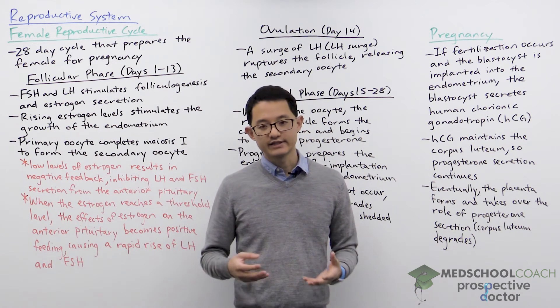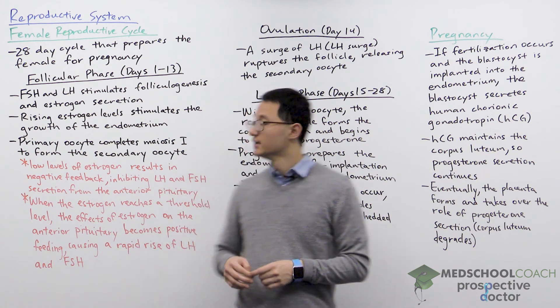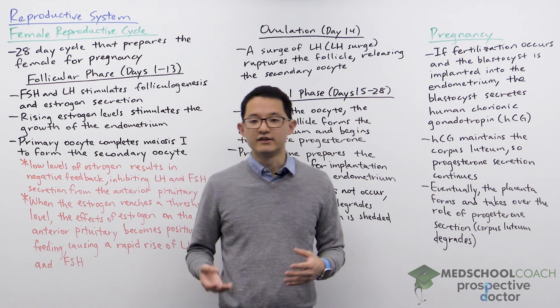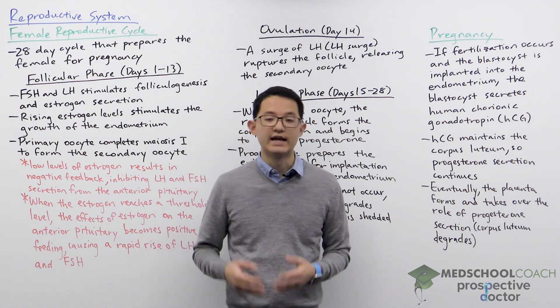You can see in this diagram that once fertilization occurs, the levels of human chorionic gonadotropin rise and then at some point drop off — when it drops off is when the placenta has formed and taken over the role of progesterone secretion. You can also see how during this process the levels of estrogen and progesterone continually rise. This concludes the description of the female reproductive cycle and what happens when fertilization does not occur as well as when fertilization does occur.